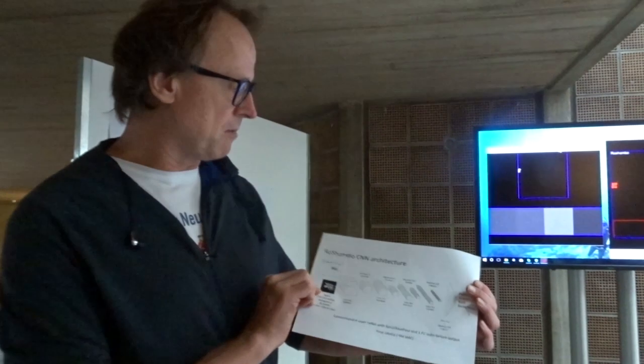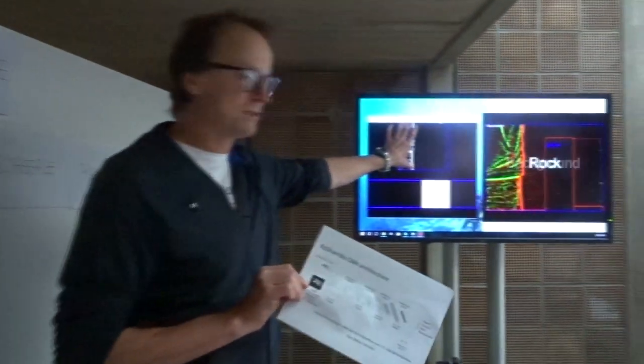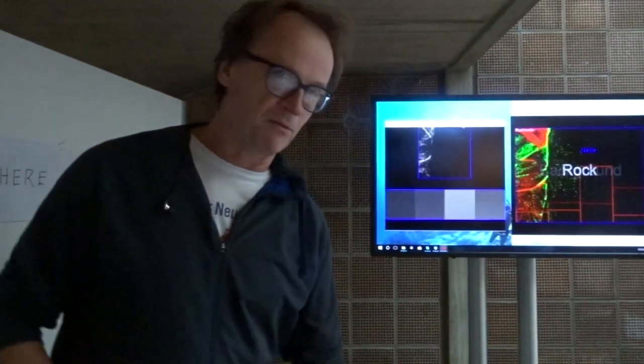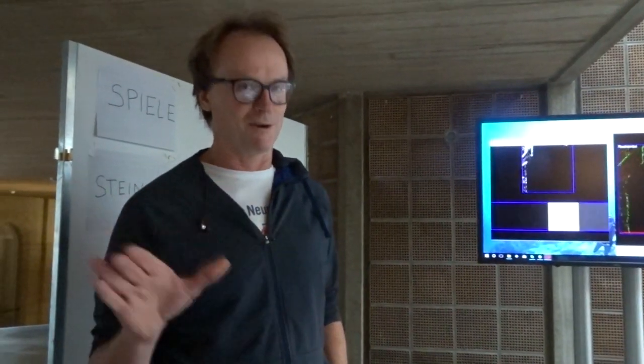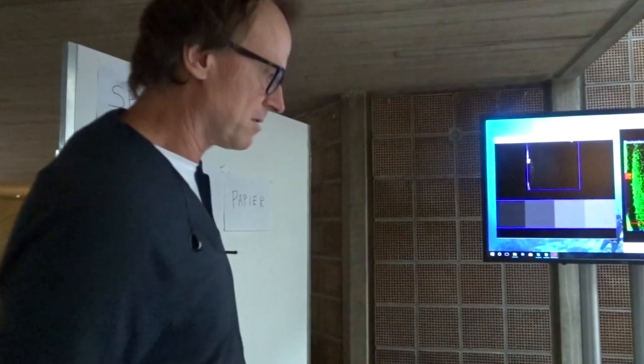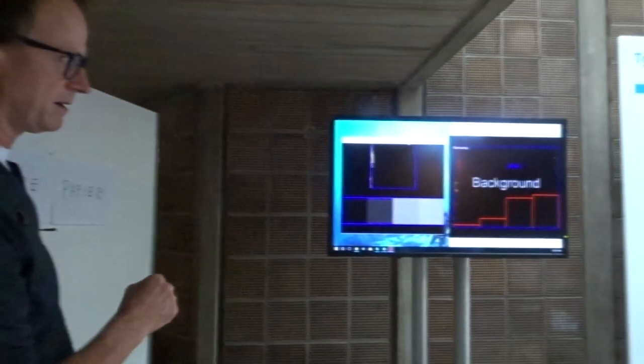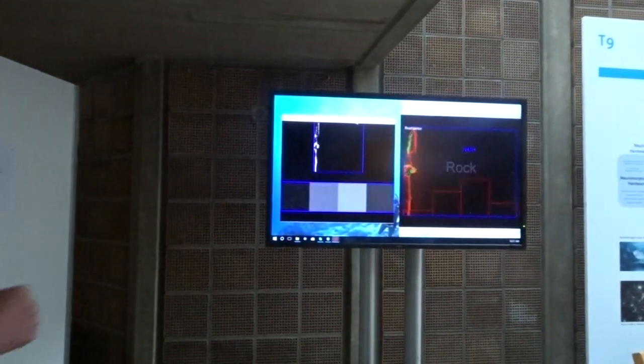But this convolutional neural network is driven with frames of one thousand events. Those one thousand event frames can come along at anywhere from one hertz up to one kilohertz. Let me demonstrate. The output up there on the right shows what the convolutional neural network actually recognizes.